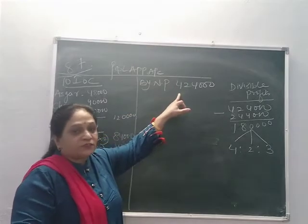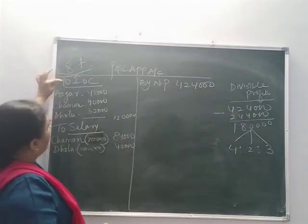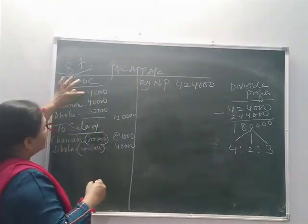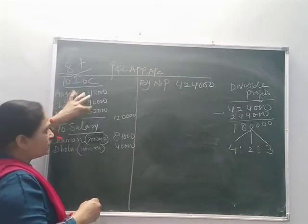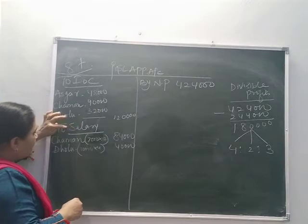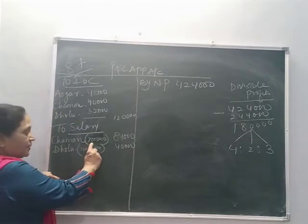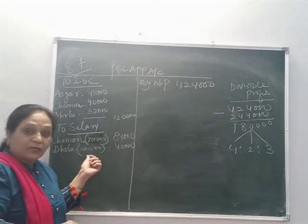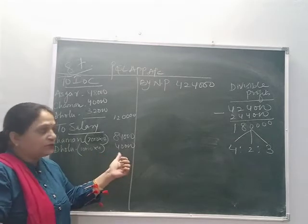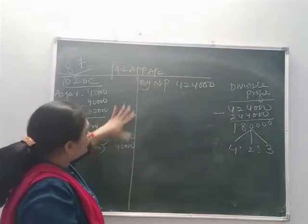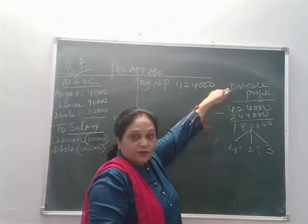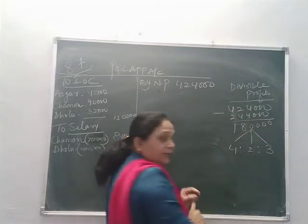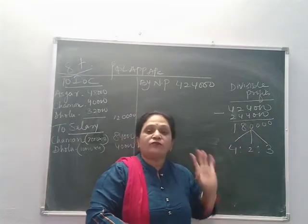Profit of 4 lakhs 25,000 is transferred here. Interest on capital is given to the partners at 8% of their capital balances: 48,000, 40,000 and 32,000 — totalling 1 lakh 20,000. Salary is provided: Chaman gets 7,000 per month, so 7,000 into 12 equals 84,000; Dholu gets 10,000 per quarter, so 10,000 into 4 equals 40,000. Subtracting all these from 4,24,000 gives the divisible profit: 1 lakh 80,000.